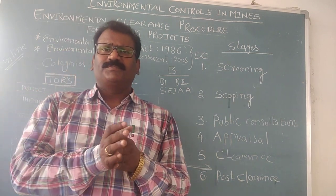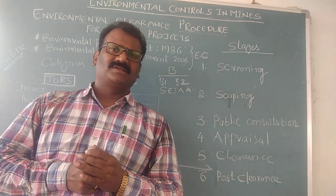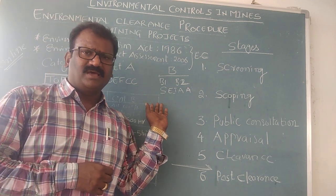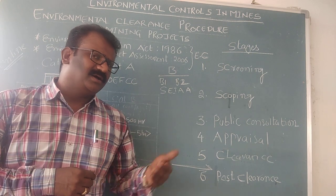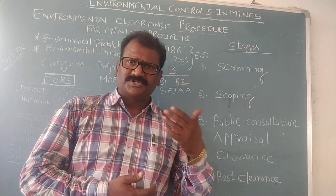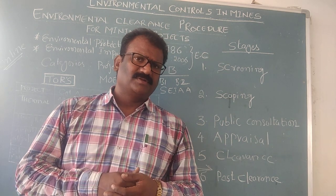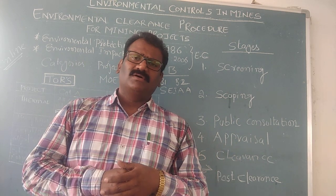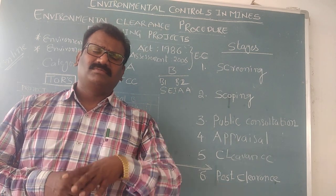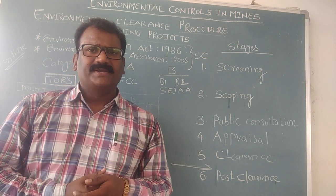The third important stage is public consultation. A public meeting is held, typically at the local gram panchayat or district level, with the district collector participating. The State Pollution Control Board authority conducts the meeting on a specified date where local people come and express their opinions. The minutes are recorded and published in public newspapers in regional language as well as central government newspapers. The notification of the public hearing date is given in advance, and no quorum is required — even if only two persons attend, the minutes are recorded and included in the documentation.